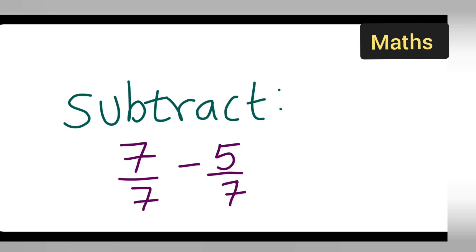So in today's class of mathematics, let us see how to subtract 7 upon 7 minus 5 upon 7. Here you all can see 7 upon 7, same denominators.